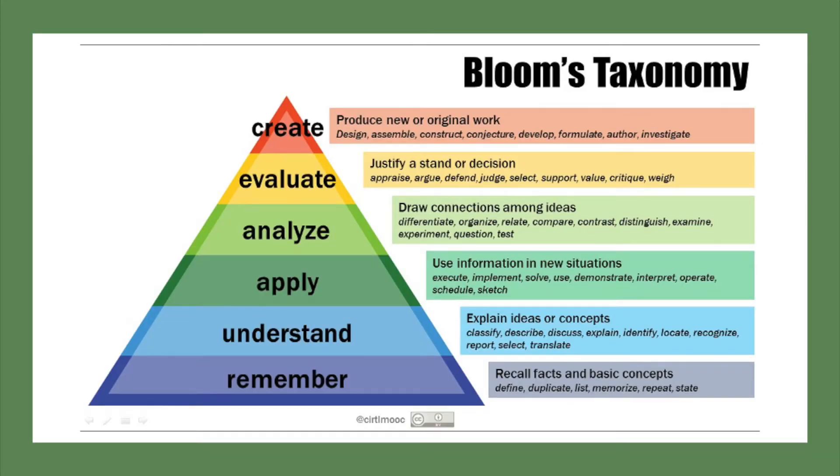In the taxonomy, the lowest level is remembering. This is memorizing or simply recalling information that is known. It may or may not involve any understanding of the concepts or material involved. For example, using Joe's Pasta and Olive Garden: what types of food do these restaurants serve, and where are these restaurants located in Victoria? These are simple knowledge questions that anyone familiar with the two restaurants can answer without much thought.